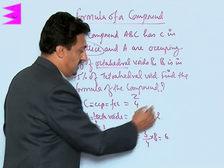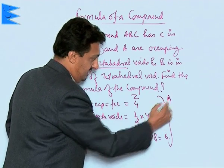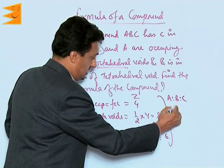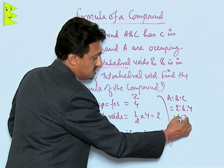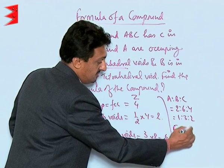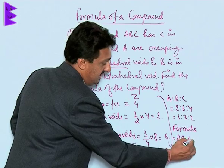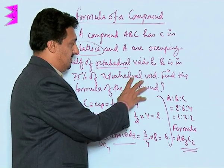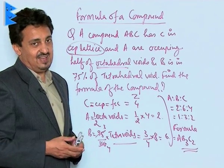So what is the ratio between A, B, and C? It is A:B:C = 2:6:4, which simplifies to 1:3:2. So the formula of the compound is AB₃C₂, and this is how we find the formula of crystalline solids.